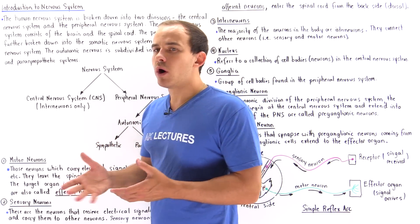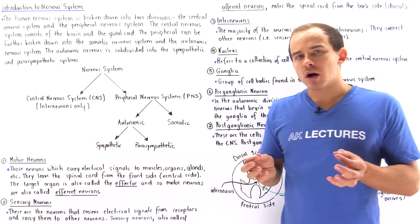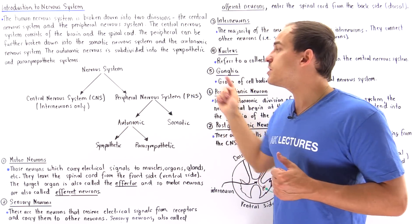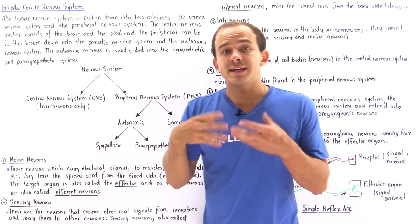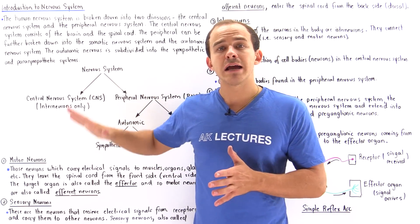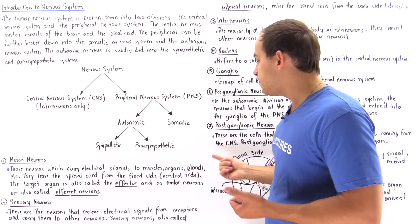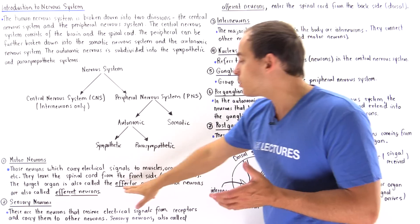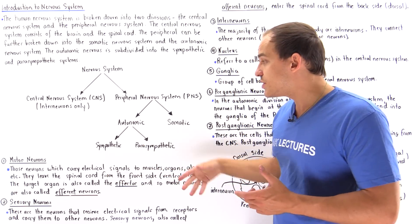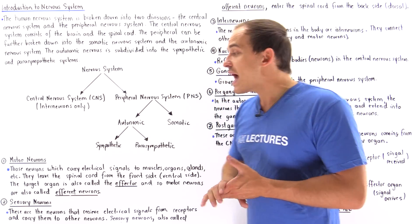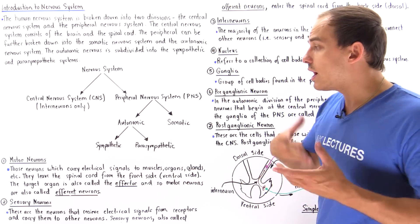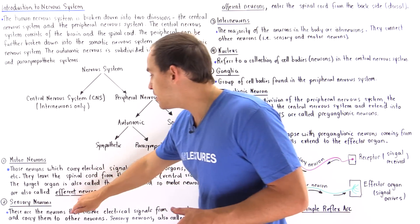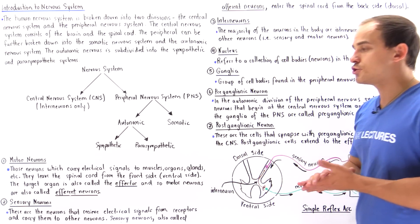A motor neuron is a neuron that begins within the central nervous system and then extends into the peripheral nervous system, carrying an electrical signal to some type of target cell. The target could be an organ, a gland, a muscle, and so forth. Because that target is usually known as an effector, motor neurons are also known as efferent neurons — these two terms are synonymous and used interchangeably.